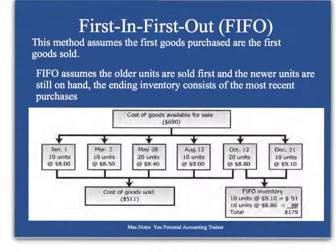Hi, I'm Dr. John and we continue our study of accounting for inventories. Now we're putting a value on the ending inventory and therefore the cost of goods sold. And there are two ways of doing this: FIFO and LIFO.